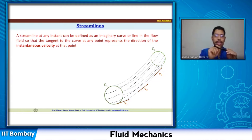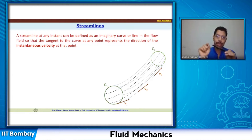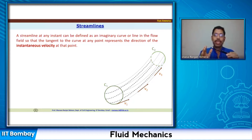Along the streamline, the velocity is in the direction of flow, so there cannot be any velocity normal to it — that is the resultant instantaneous velocity direction. At each point, there is no transverse velocity, so there cannot be any flow across the streamline. Flow takes place along the streamline, and the tangent at any point on the streamline represents the direction of the instantaneous velocity at that point.